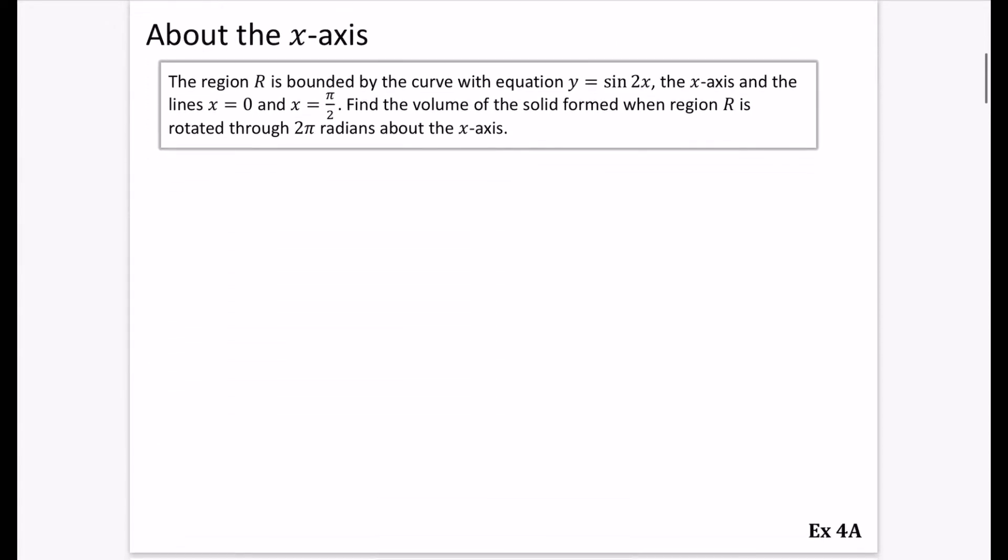So I'm literally just going to do one example about this, about the x-axis, and then you can try exercise 4A. So it says the region R is bounded by the curve with equation y equals sine 2x, the x-axis, and the lines x equals 0 and x equals pi over 2. Find the volume of the solid formed when region R is rotated through two pi radians about the x-axis.